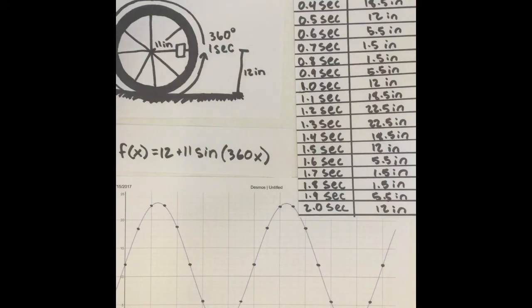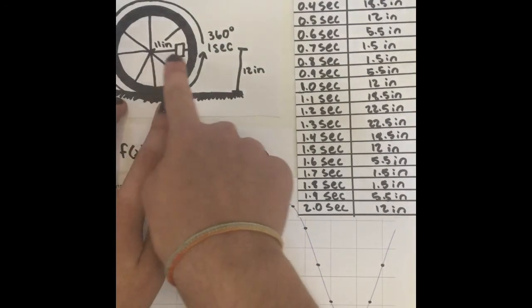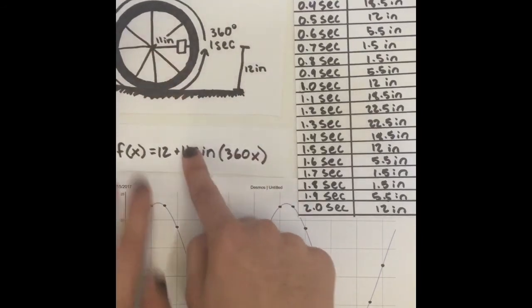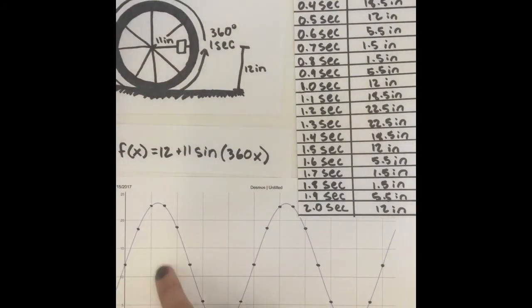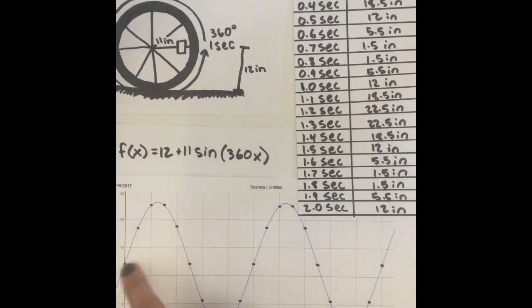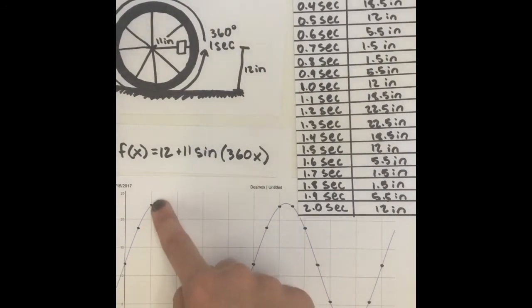The 11 comes from the radius of the circle made by the reflector going around, so this 11 turns into this 11, which becomes the amplitude of the graph, meaning from the middle of the midline to the top of the graph is 11, and from the midline to the bottom of the graph is 11.